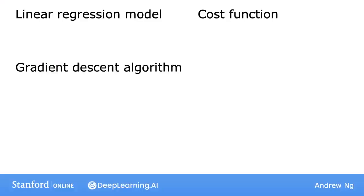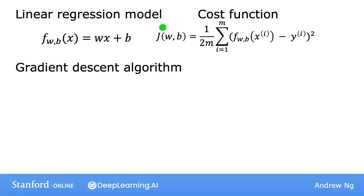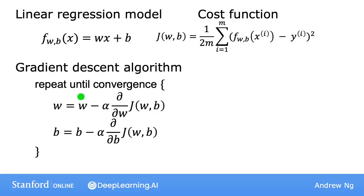Here's the linear regression model and to the right is the squared error cost function and below is the gradient descent algorithm. It turns out if you calculate these derivatives, these are the terms you would get.